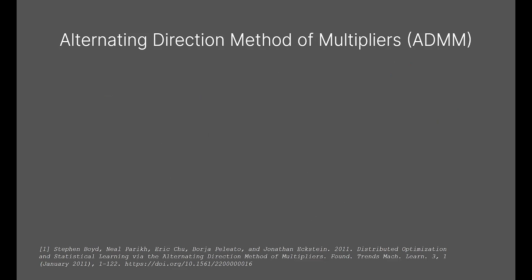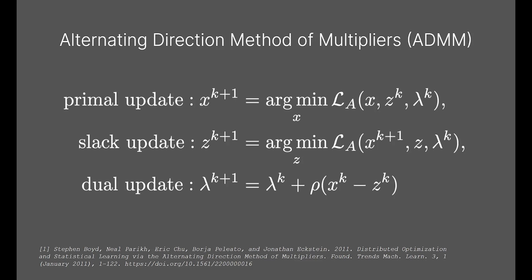At the heart of our solver is the alternating direction method of multipliers, or ADMM, which has been derived in prior works. The algorithm alternates between solving three sets of variables: the primal, slack, and dual, until convergence.